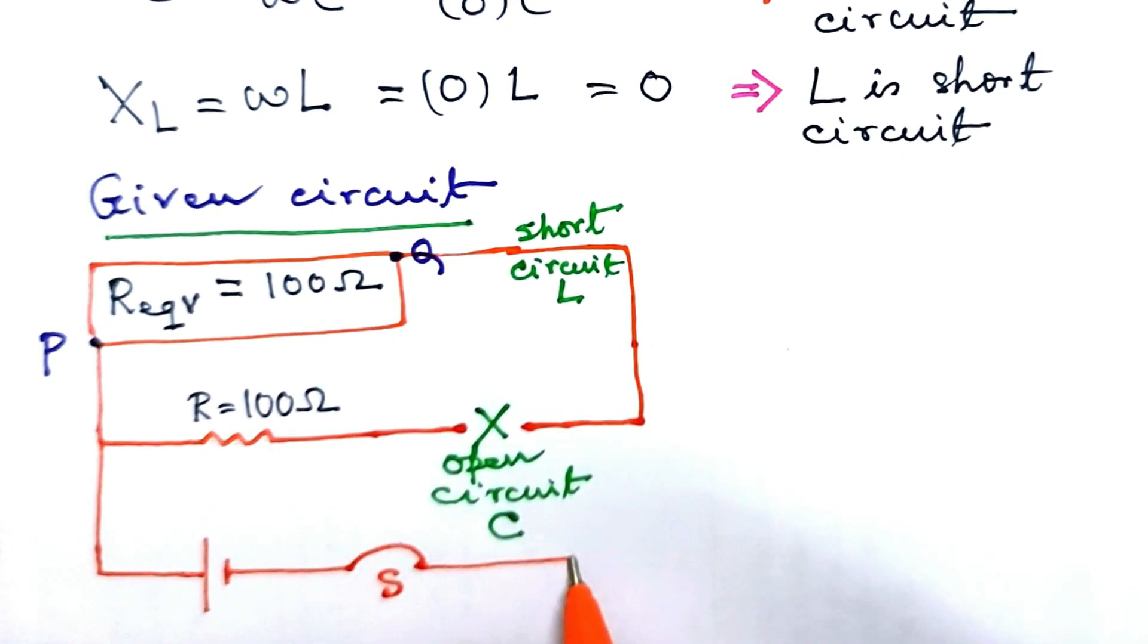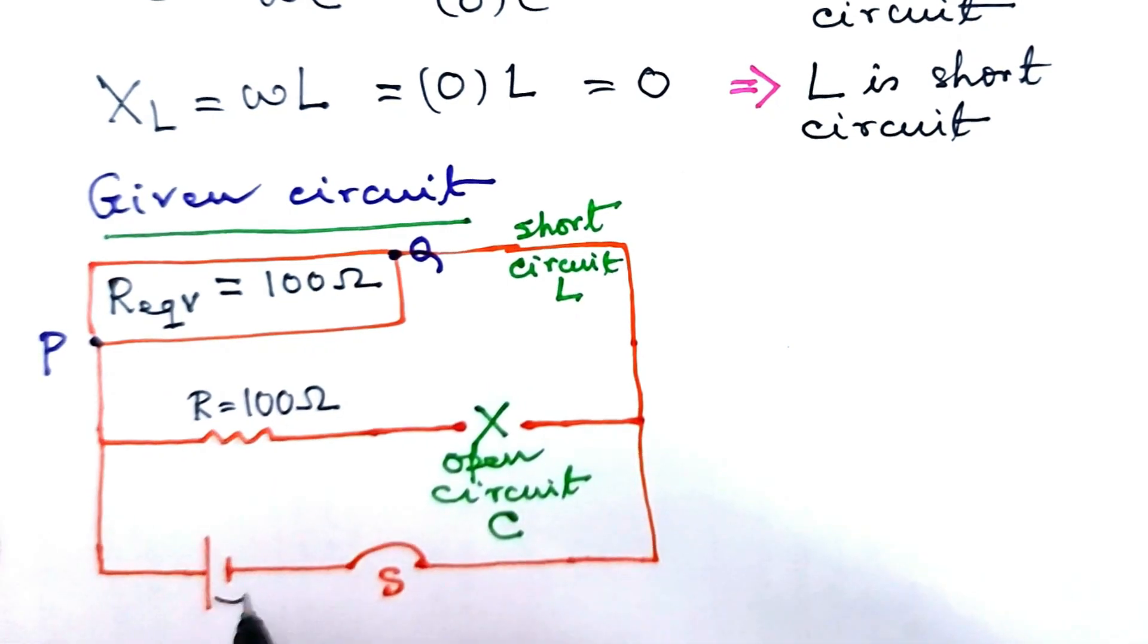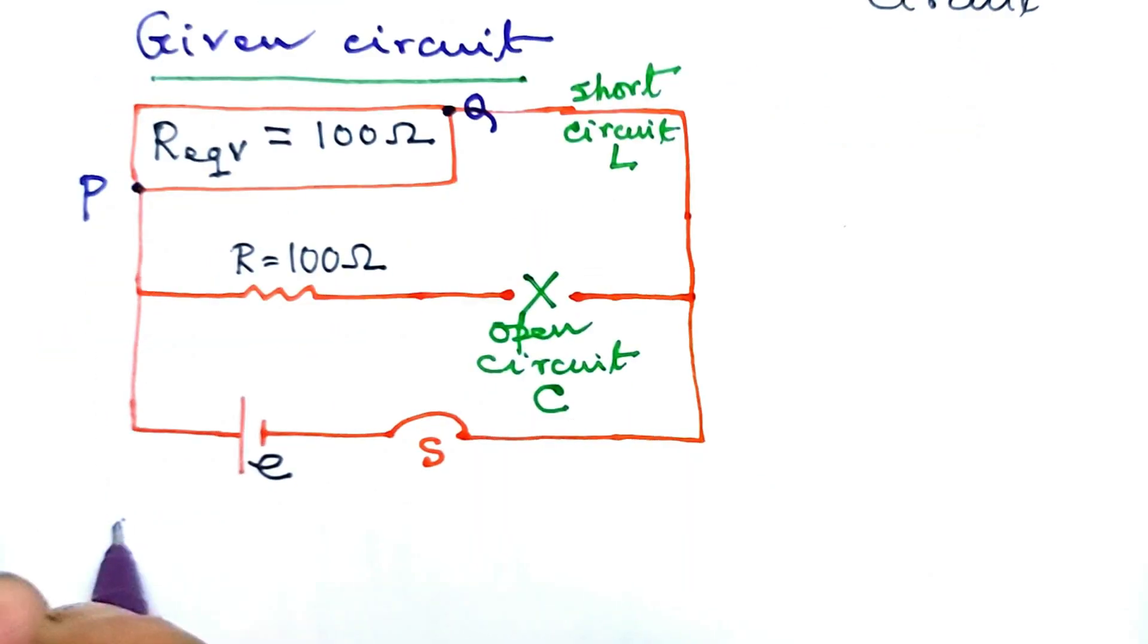Clearly we have a complete circuit comprising of emf and resistance R equivalent equal to 100 ohm, just connected through the switch s.